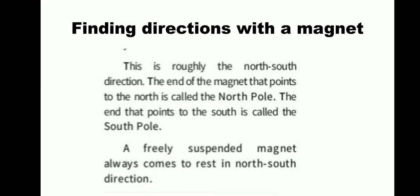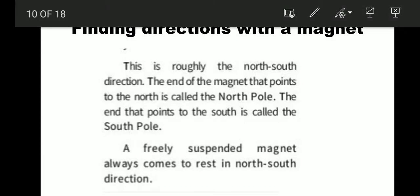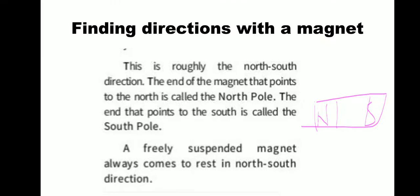Finding directions. A magnet has one north pole and one south pole, pointing roughly in the north and south directions. The end of the magnet that points to the north is called the north pole. The end that points to the south is called the south pole. A freely suspended magnet always comes to rest in the north-south direction.